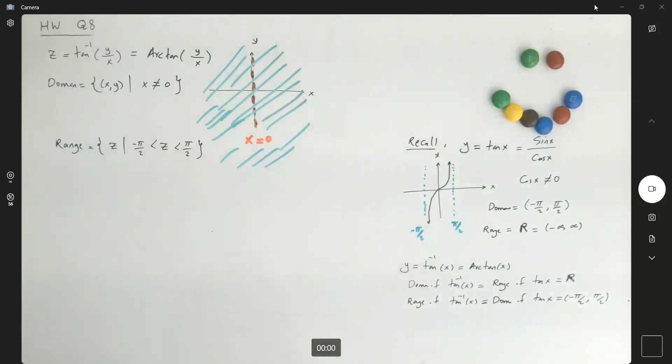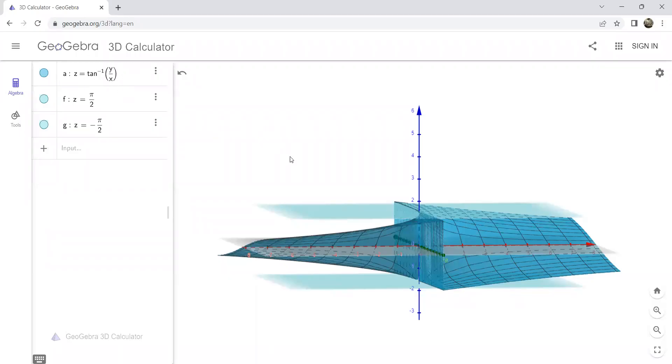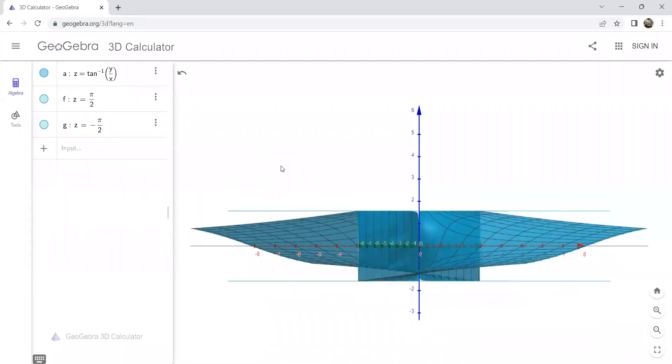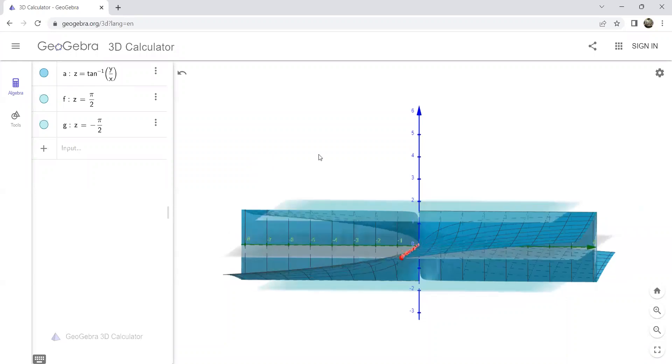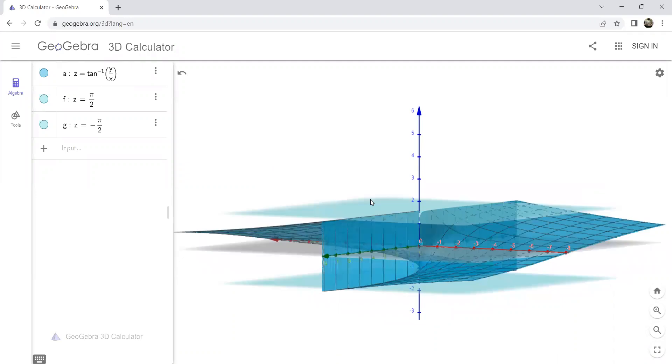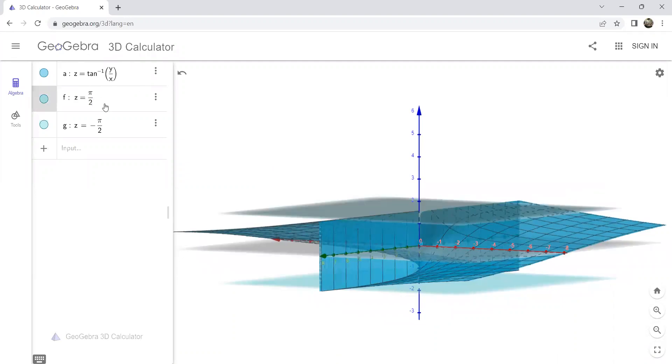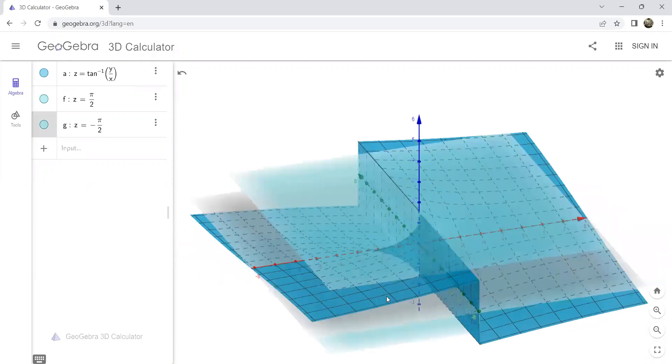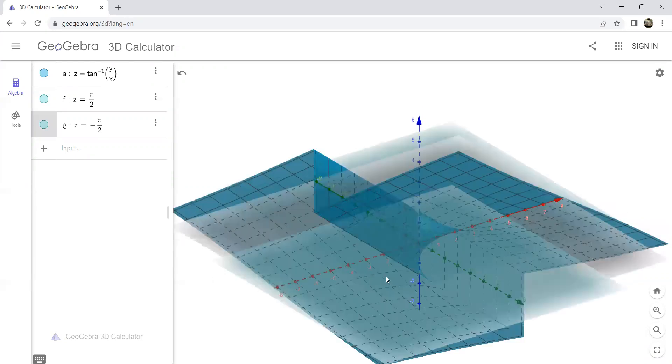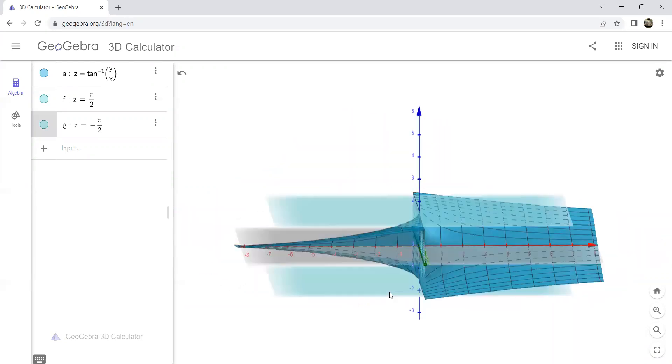Let us take a look at the graph together. z equals inverse tangent of y over x. As you can see, the graph has output values, z values that are sandwiched between negative pi over 2 and pi over 2. pi over 2 is the top plane and z equals negative pi over 2 is the bottom plane. Behavior of inverse tangent y over x. And here you have the allegiance to the bottom plane.